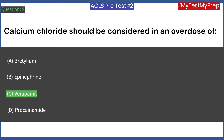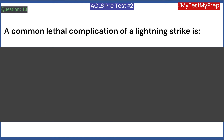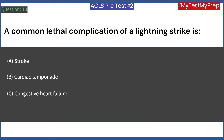A common lethal complication of a lightning strike is: A. Stroke. B. Cardiac tamponade. C. Congestive heart failure. D. Respiratory arrest. Answer: D. Respiratory arrest.